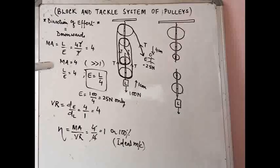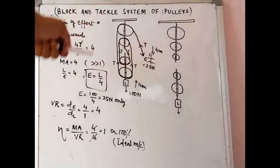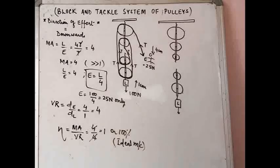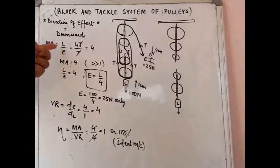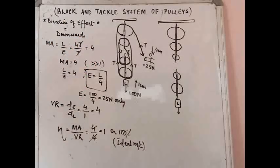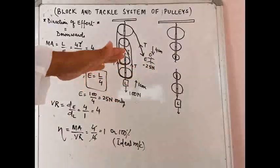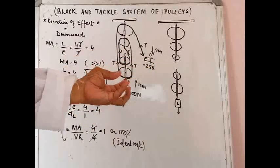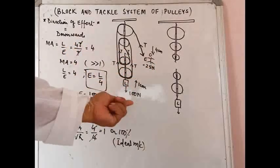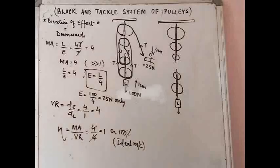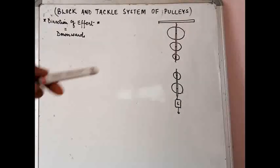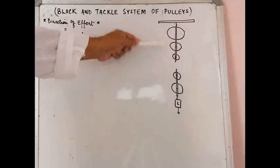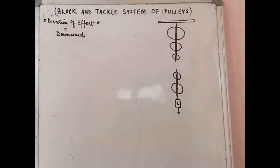This block and tackle system is a good force multiplier since MA = 4, which is much greater than 1. It reduces your required effort to one-quarter — for lifting something as heavy as 100 N, you only require 25 N.